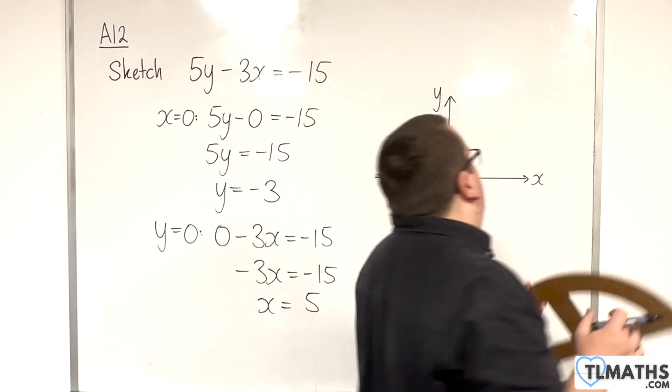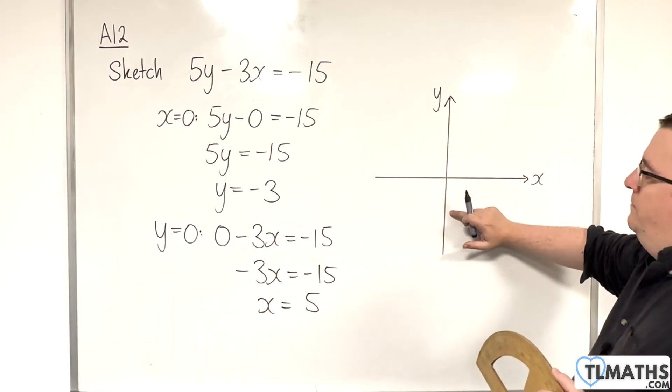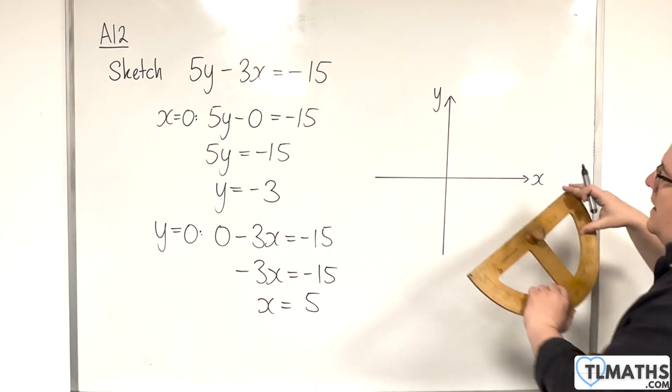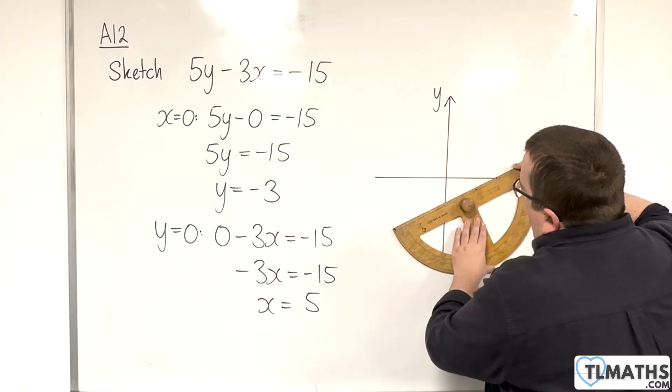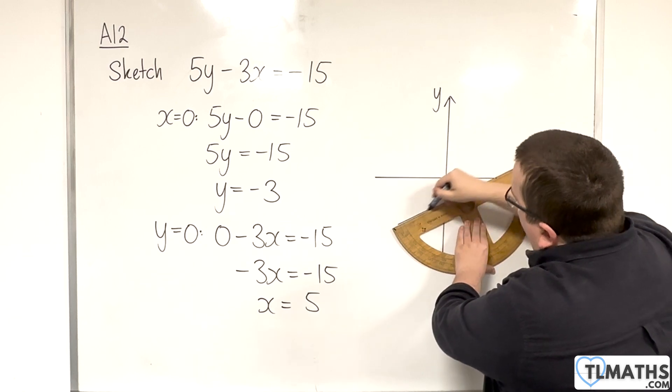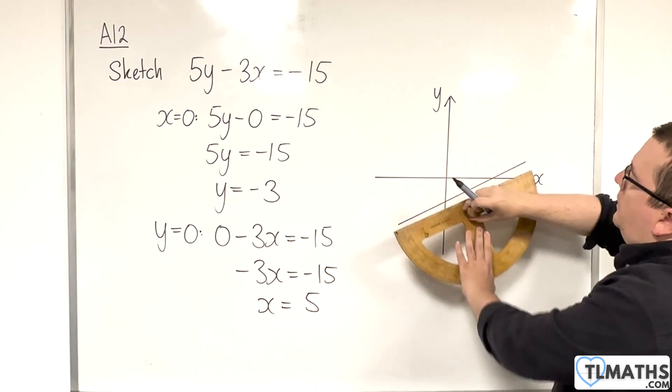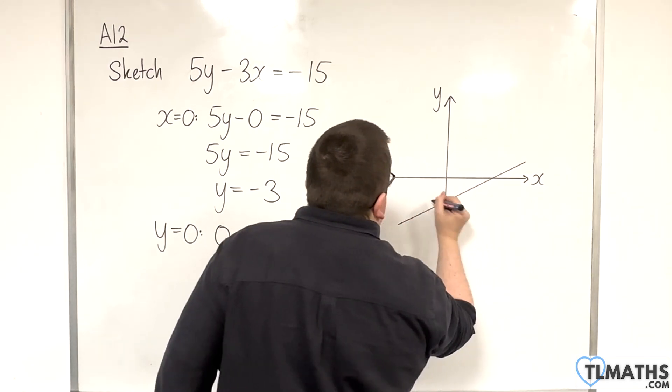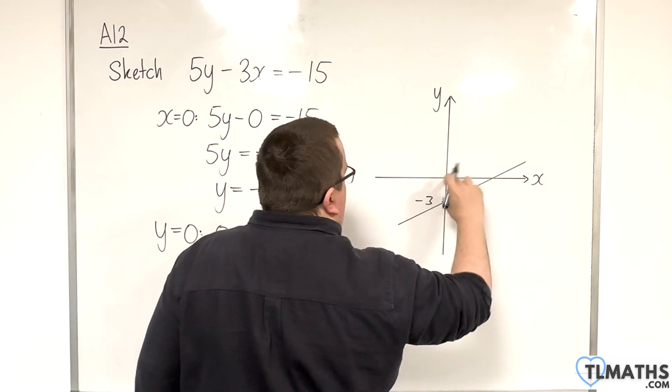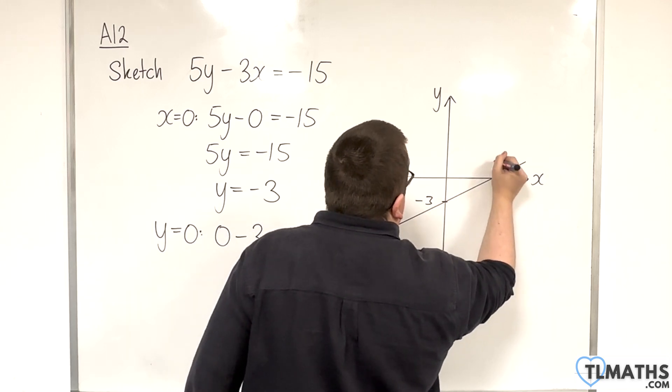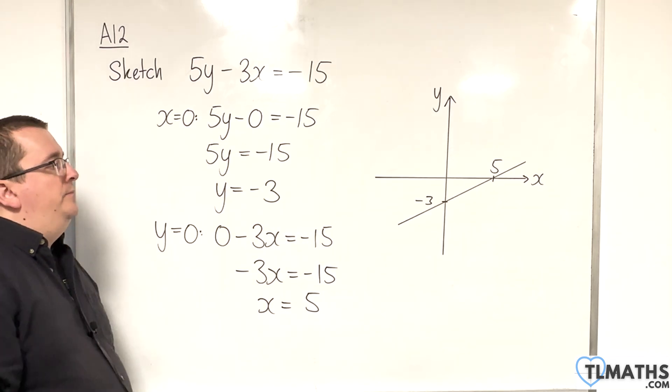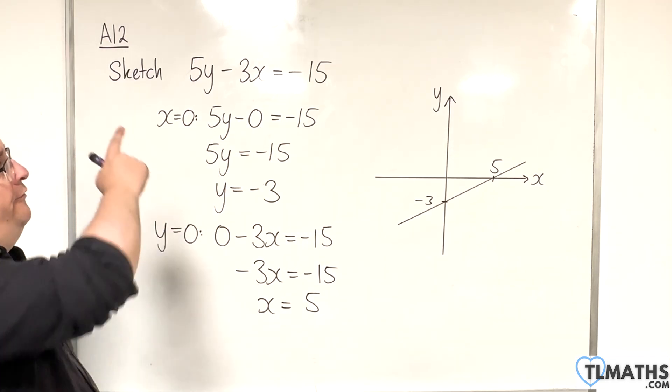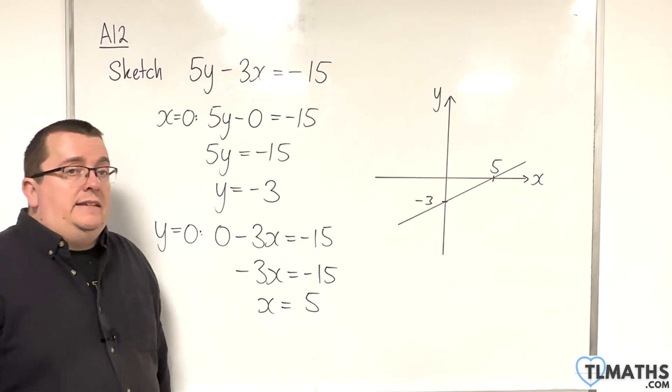So, it's crossing through minus 3 on the y-axis and positive 5 on the x-axis. Now, I'll try and make sure the gradient is fairly shallow for this so that it's clear that this distance is less than that distance because that's 3 and that's 5. That's a good sketch of 5y take away 3x is negative 15.